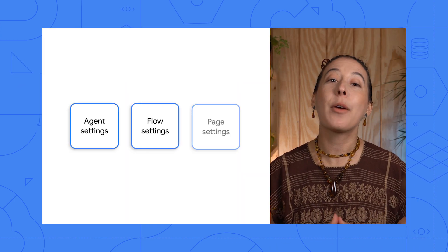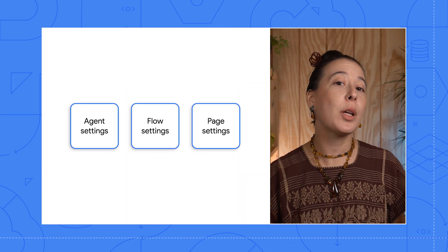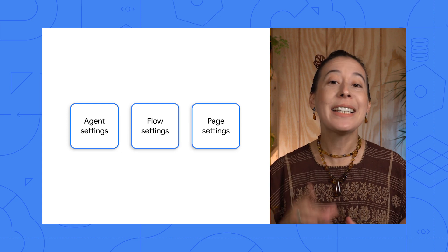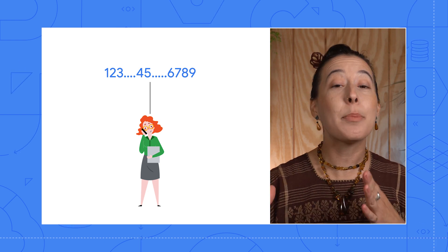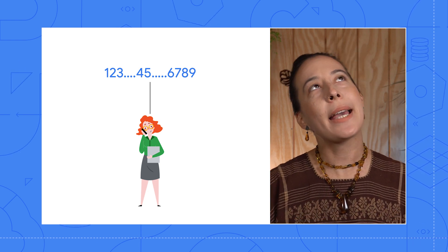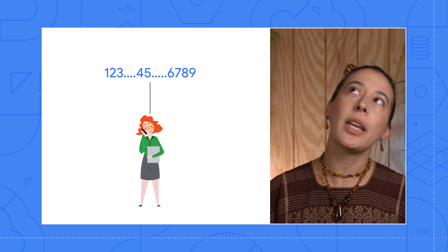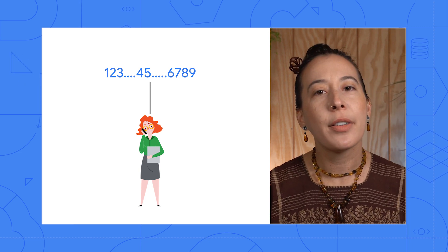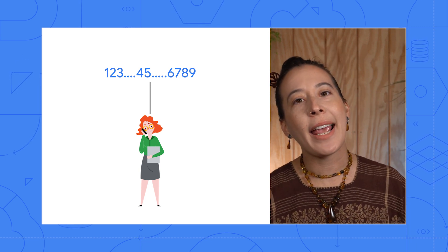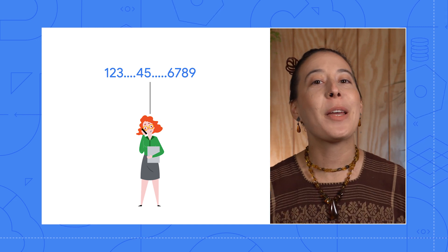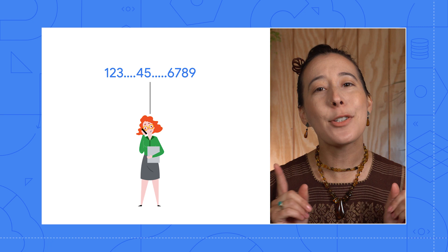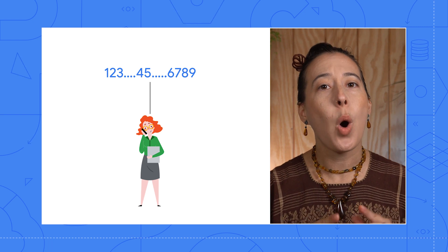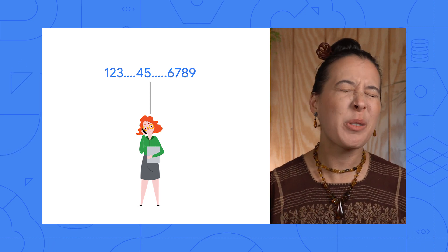Now, you may be thinking: when might I want to use the page and flow level settings? This depends on your use case. For example, let's say a user dictates and pauses in between numbers, such as: my account number is 1-2-3-4-5-6-7-8-9. The user benefits from extending the timeout, so you may want to make sure that the timeout setting isn't too short or the user will be cut off, which is very rude in conversations.